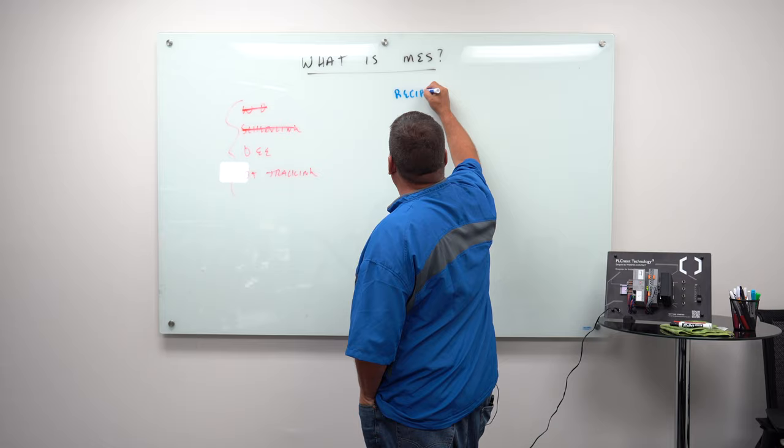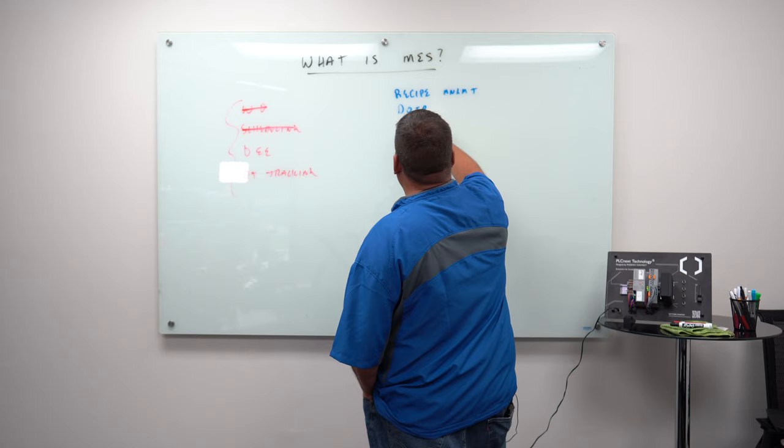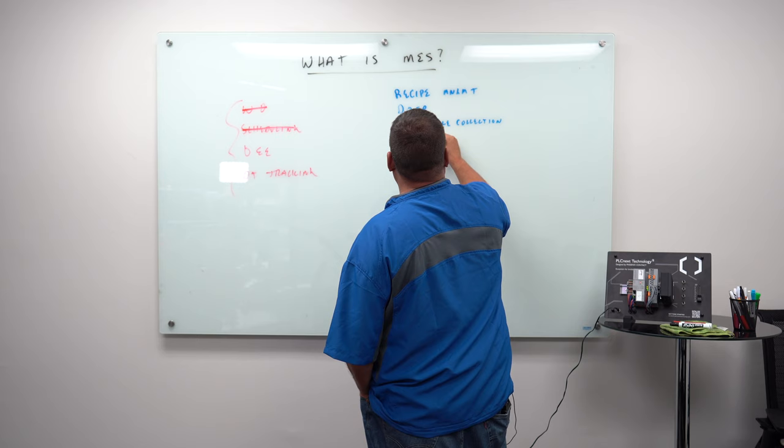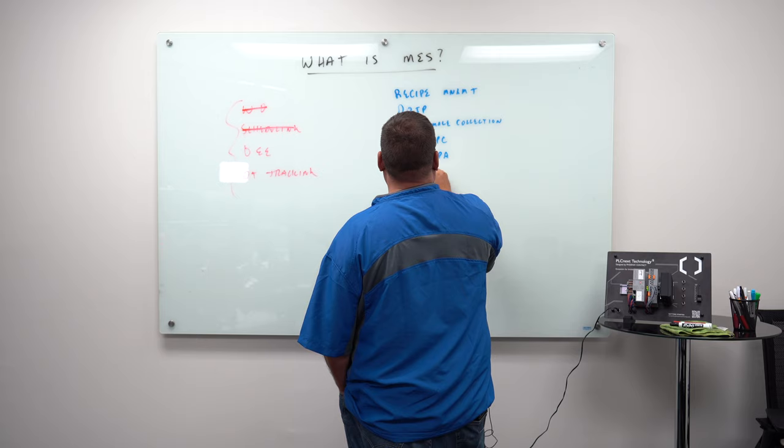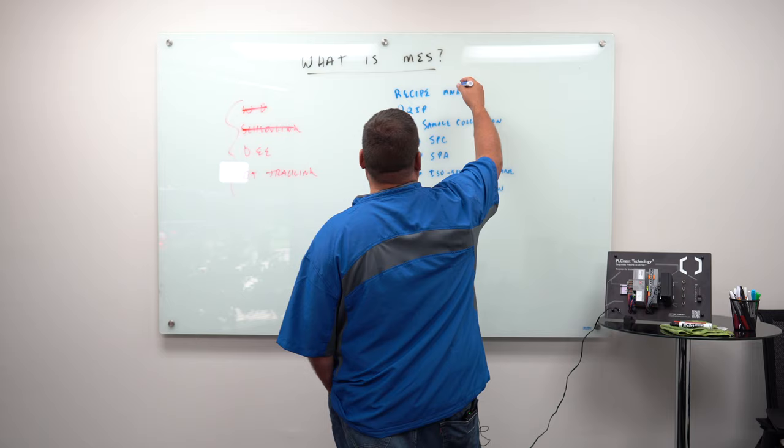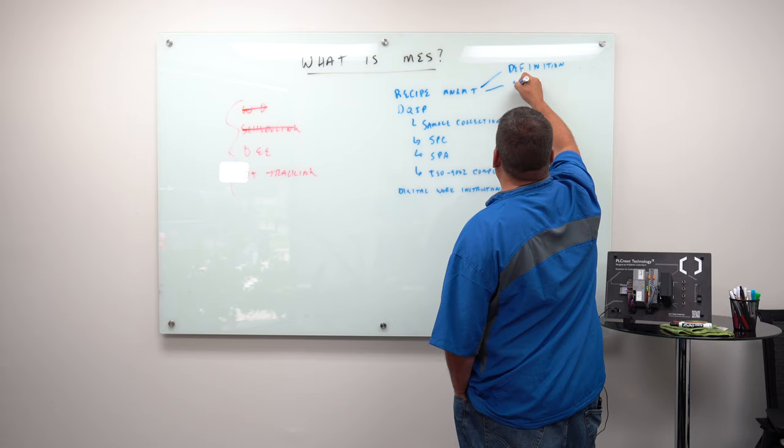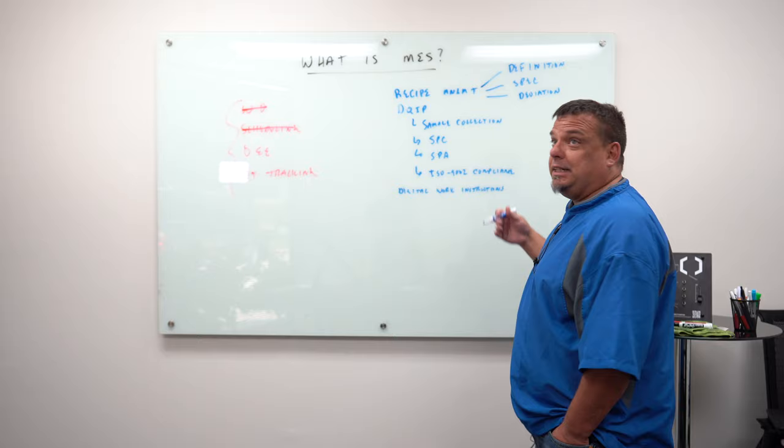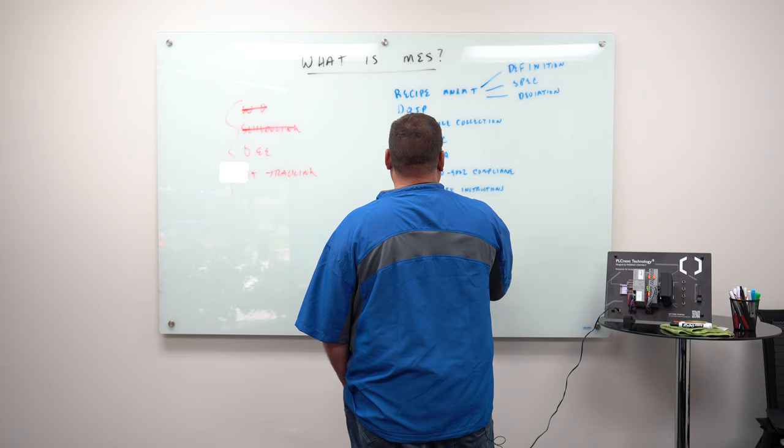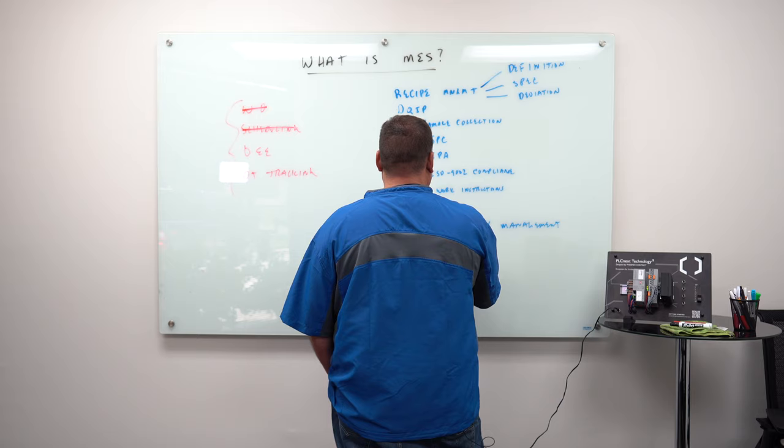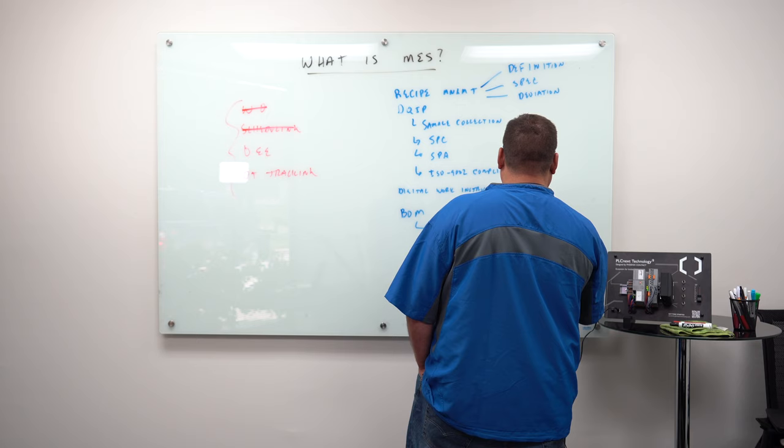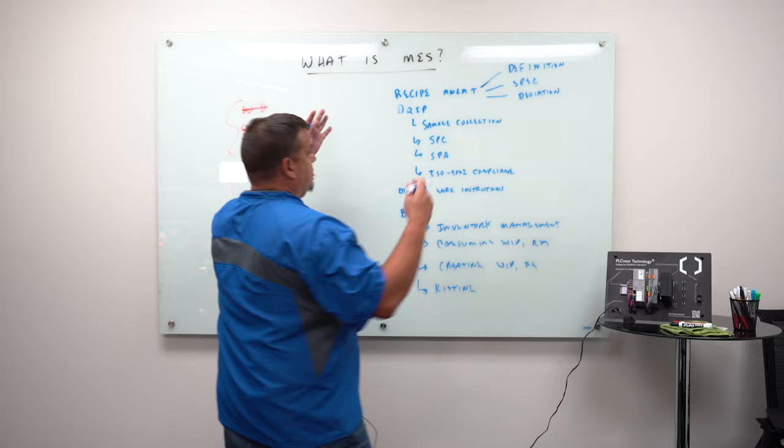So let's start with recipe management. Let's go to DQIP, digital quality inspection plans. We could do sample collection for quality. We could do SPC, statistical process control. We could do SPA. We could do ISO 9001 compliance. We could do digital work instructions. Recipe management could be definition. This could be SPC, and this could be deviation tracking. Inventory consuming. So from BOM to inventory management, that is consuming WIP and raw material, creating WIP and finished goods. You could also have kitting involved in this. Those are just some of the additions. There's like a hundred other capabilities.